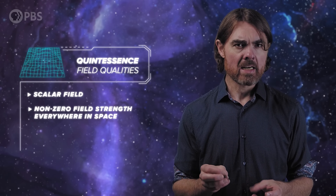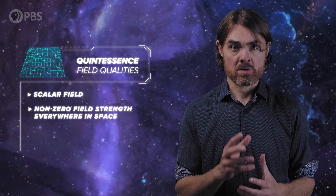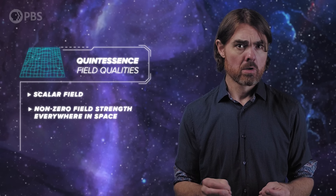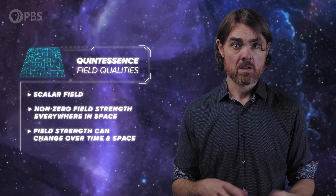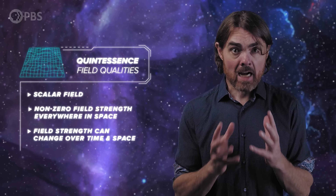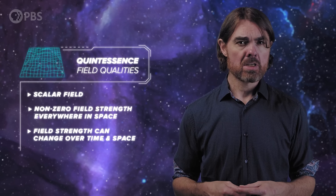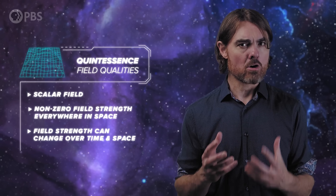The equation of state depends on the field strength and the kinetic energy of the particles in the field. The field strength can also change over time and over space, so omega can change, and with it the behavior of dark energy can change. This dynamical nature of quintessence is what makes it so powerful. For example, if the strength of dark energy has changed since the early universe, then the Hubble tension could be explained.